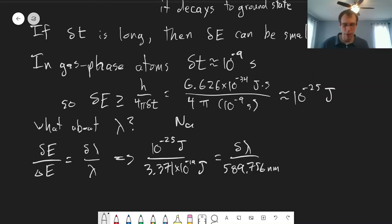That's what I gave in the previous example. So that gives us a value of delta lambda of 1.7 times 10 to the minus 4 nanometers.